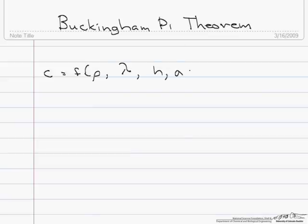and the surface tension of the liquid. So we have five variables: c, rho, lambda, h, and sigma.